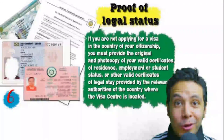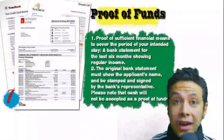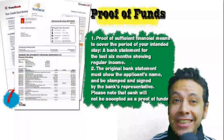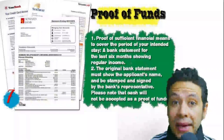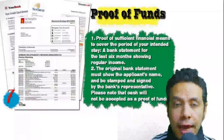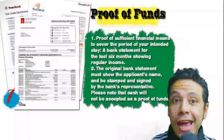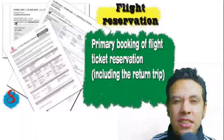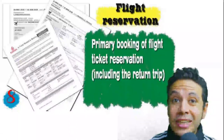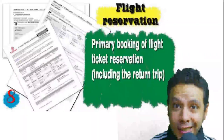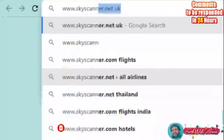If you are applying from a country different from your own, you will need to provide proof of legal residence in that country — a valid residence visa can also be accepted. You will also need to provide proof of sufficient funds, which is a bank statement showing your balance for at least six months. The statement must show your name, signed and stamped by the bank. Cash will not be accepted. You should also provide a flight reservation, ideally with a return ticket.